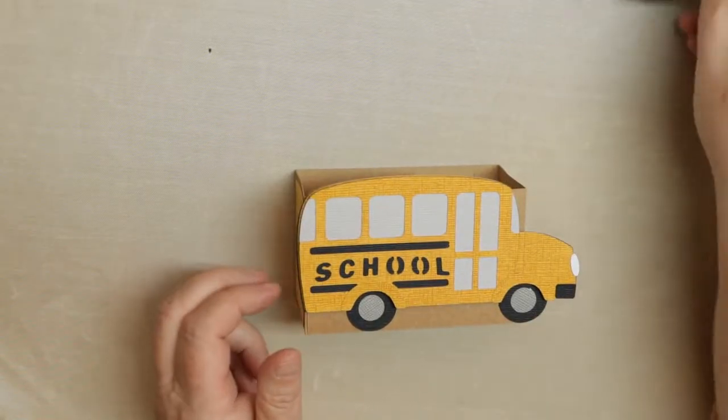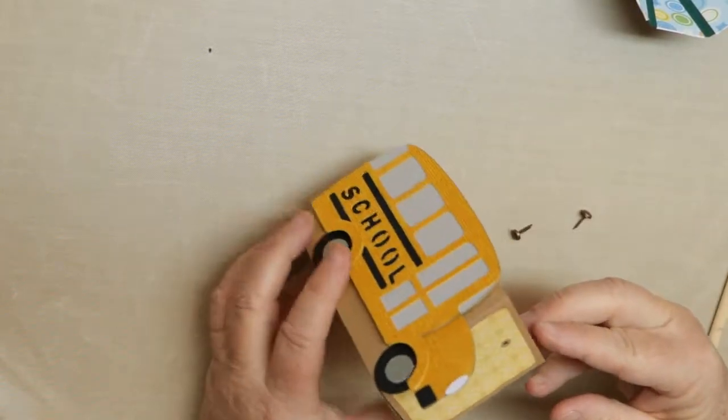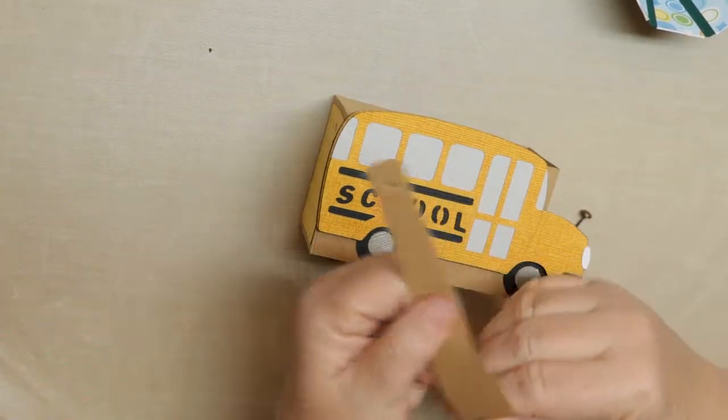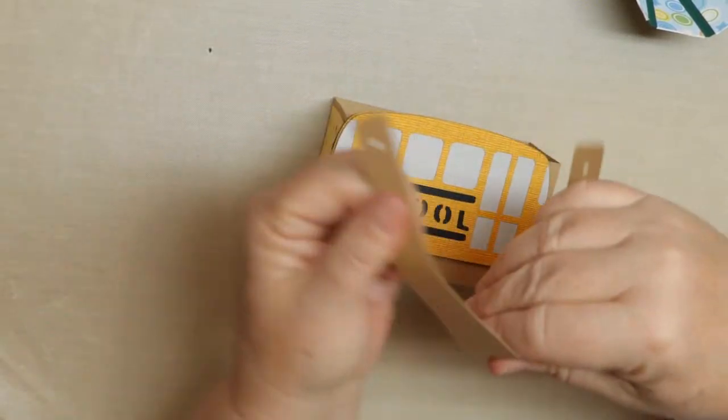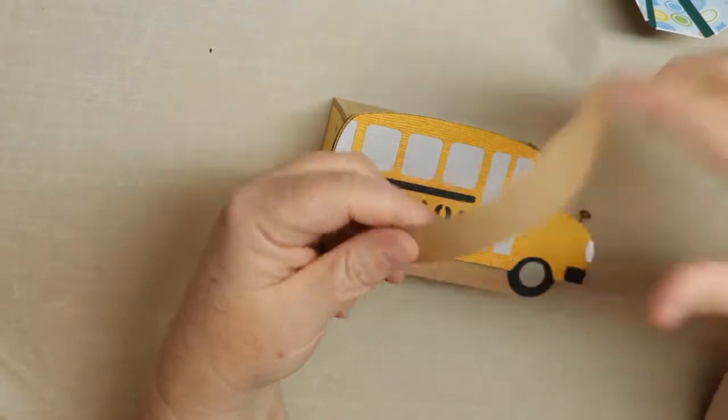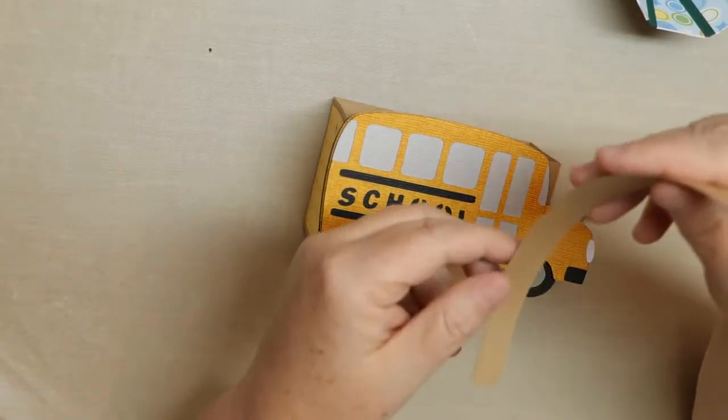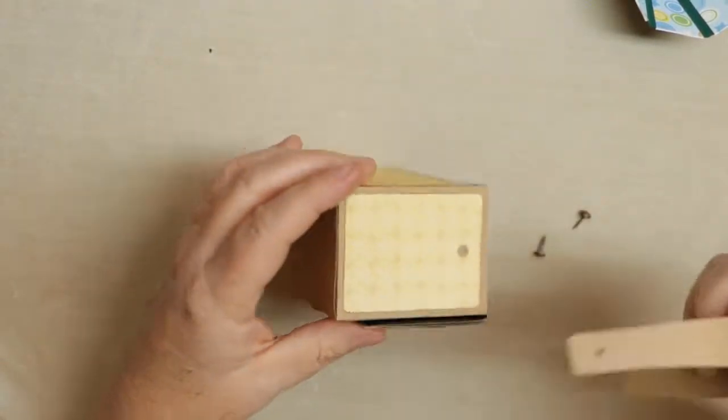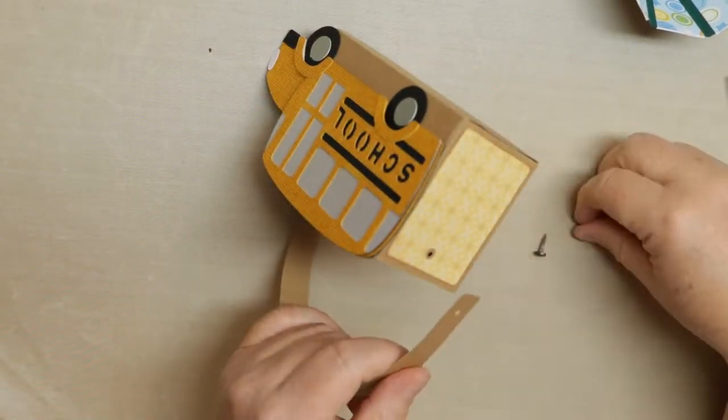So the last thing we need to do is just add the handle. So we're just going to curl the handle a little bit by burnishing a little bit just to give it a look, a curve, before you put it on. And then I have some brads that I'd like to use to attach things like this and the reason I like the brads, it's because you can rotate the handle once you have it attached.